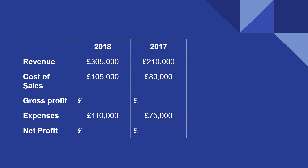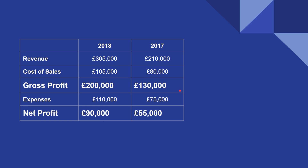Let's look at understanding profit and loss accounts. Just remember: gross profit equals revenue minus cost of sales; net profit equals gross profit minus expenses. You can complete the table using those formulas — there's the key information.